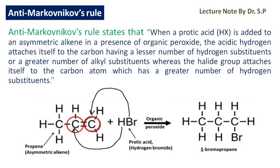Hi, in this tutorial, I will discuss Anti-Markovnikov's rule. This rule states that when a protic acid like hydrogen halide is added to an asymmetric alkene in the presence of organic peroxide, the acidic hydrogen attaches itself to the carbon having a lesser number of hydrogen substituents or a greater number of alkyl substituents, whereas the halide group attaches itself to the carbon atom which has a greater number of hydrogen substituents.